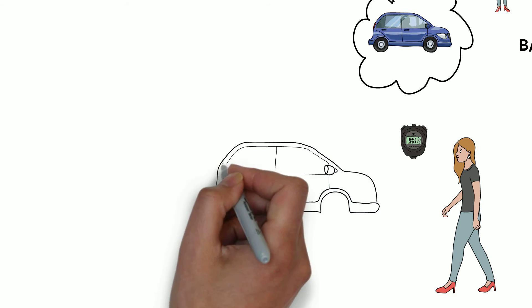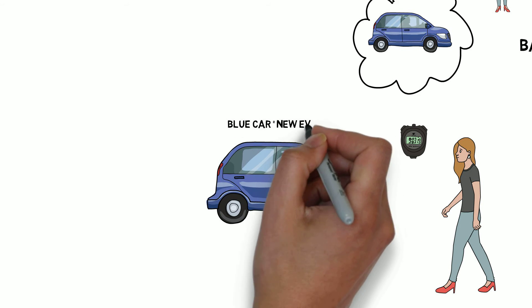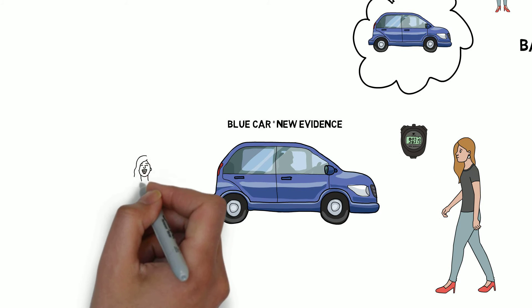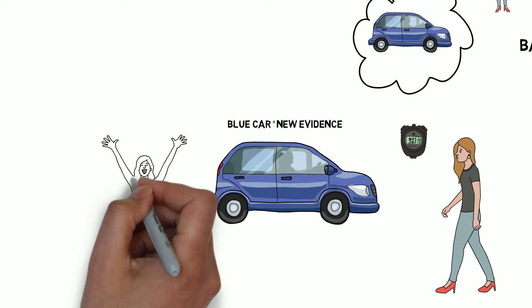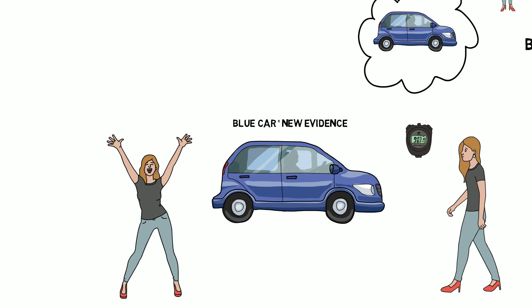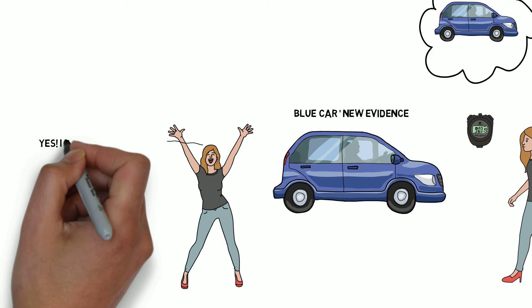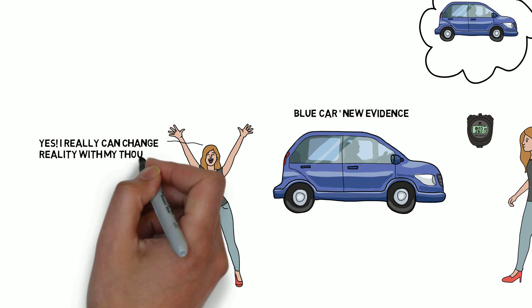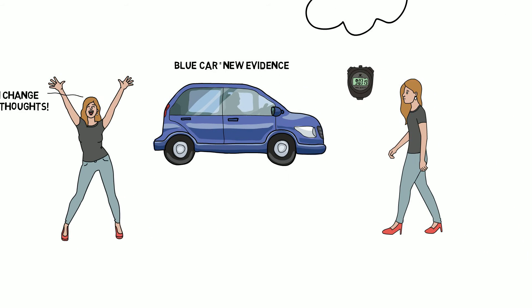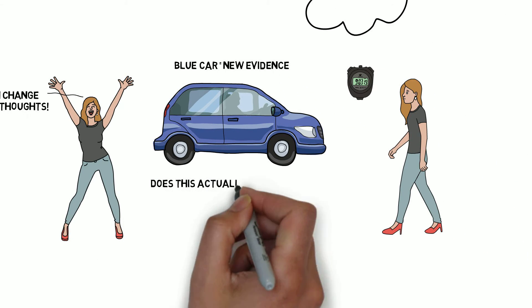Confirmation bias would be using this new piece of evidence — the blue car — to confirm her existing belief that what she thinks inside her head changes what happens in the real world. But looking at Jane's experiment, we can see that there are some problems with Jane using this evidence to back up her claim.